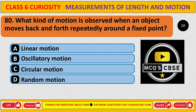What kind of motion is observed when an object moves back and forth repeatedly around a fixed point? The correct answer is B, oscillatory motion.